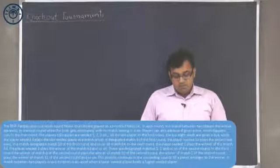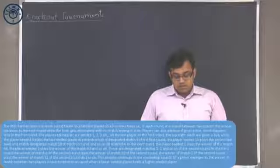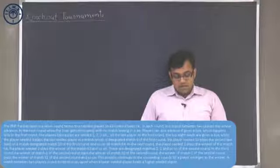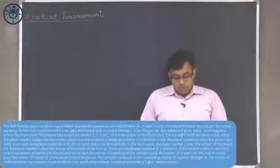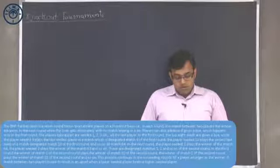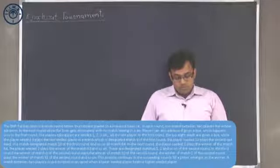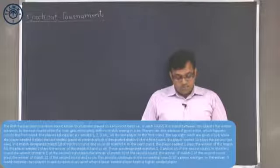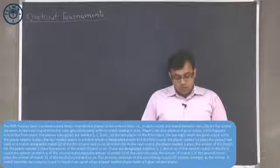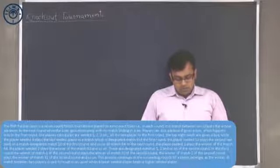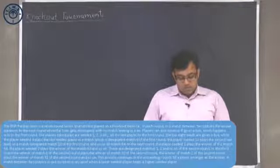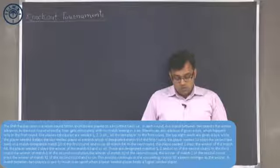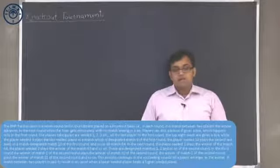The players taking part are seeded 1, 2, 3 till the last player. In the first round, the top eight seeded are given a bye, while the player seeded 9 plays the last seeded player and so on. In the next round, player 1 will play with the winner of match 64, player seeded 2 plays the winner of match 63 and so on. The process continues in the successive rounds till a player emerges as the winner. A match between two players is said to result in an upset when a lower seeded player beats a higher seeded player.